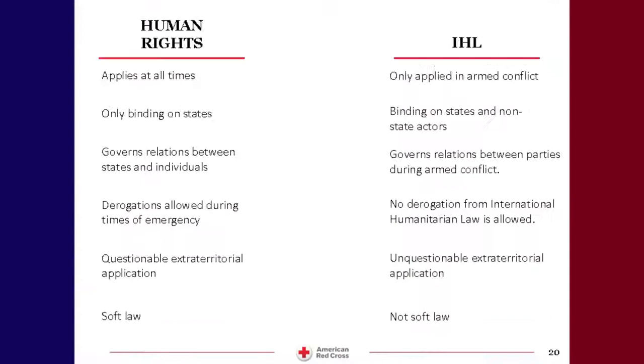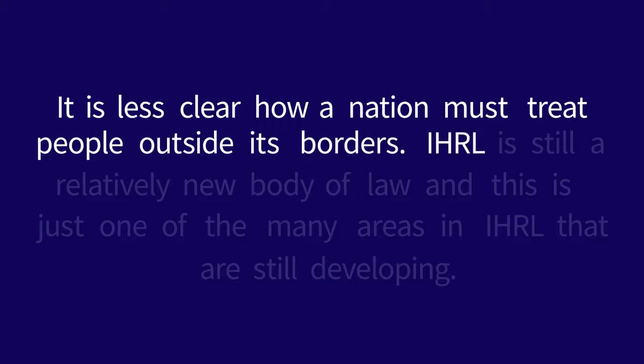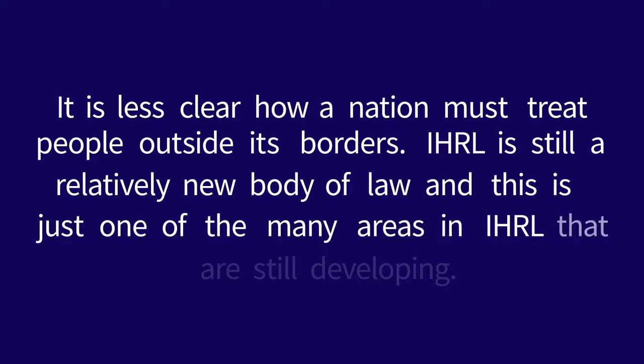IHRL applies at all times, unlike IHL, which only applies during times of armed conflict. IHRL applies during peace and armed conflict. IHRL applies within the borders of a nation, and there is near universal agreement that some standard of human rights should apply to the people who live within the nation's borders, as it is clear to see how these people are under the control of the government of that nation. It is less clear how a nation must treat people outside its borders. IHRL is still a relatively new body of law, and this is just one of the many areas in IHRL that are still developing.